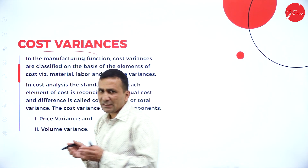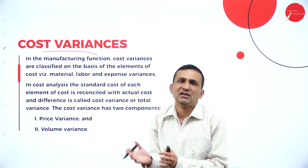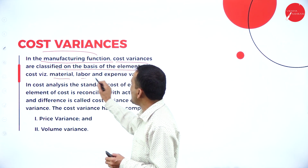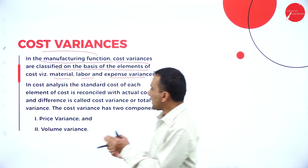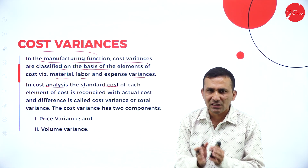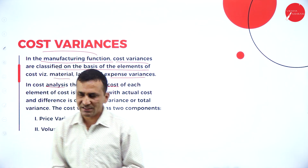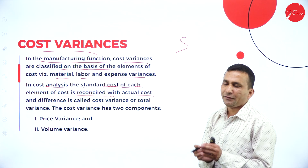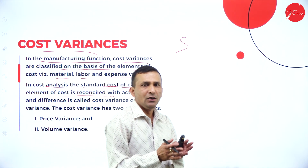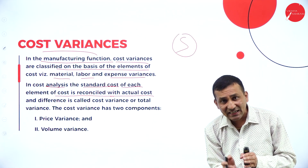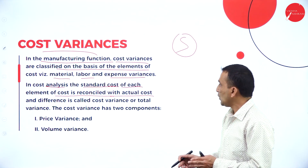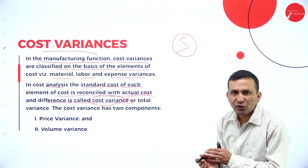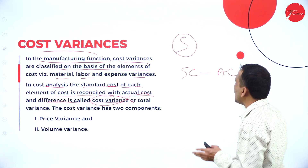The cost variance is only applicable for the manufacturing product, not for service products. In a manufacturing function, the cost variances are classified on the basis of elements like materials, labor, and expenses or overheads. The standard cost set for material, labor, and overheads is reconciled with the actual cost. Standard cost minus actual cost is nothing but the cost variance.